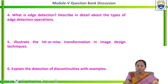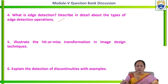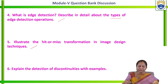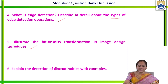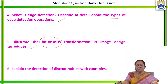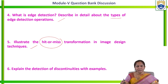The next question is: what is edge detection? Describe in detail the types of edge detection operators. We should explain what edge detection means and write about the different types of edge detection operators. Next, illustrate about hit or miss transformation in image design techniques — here we have discussed three conditions: hit, miss, and fit. We consider one example image with a structuring element and based on comparing the elements of the image and structuring element, determine the condition.